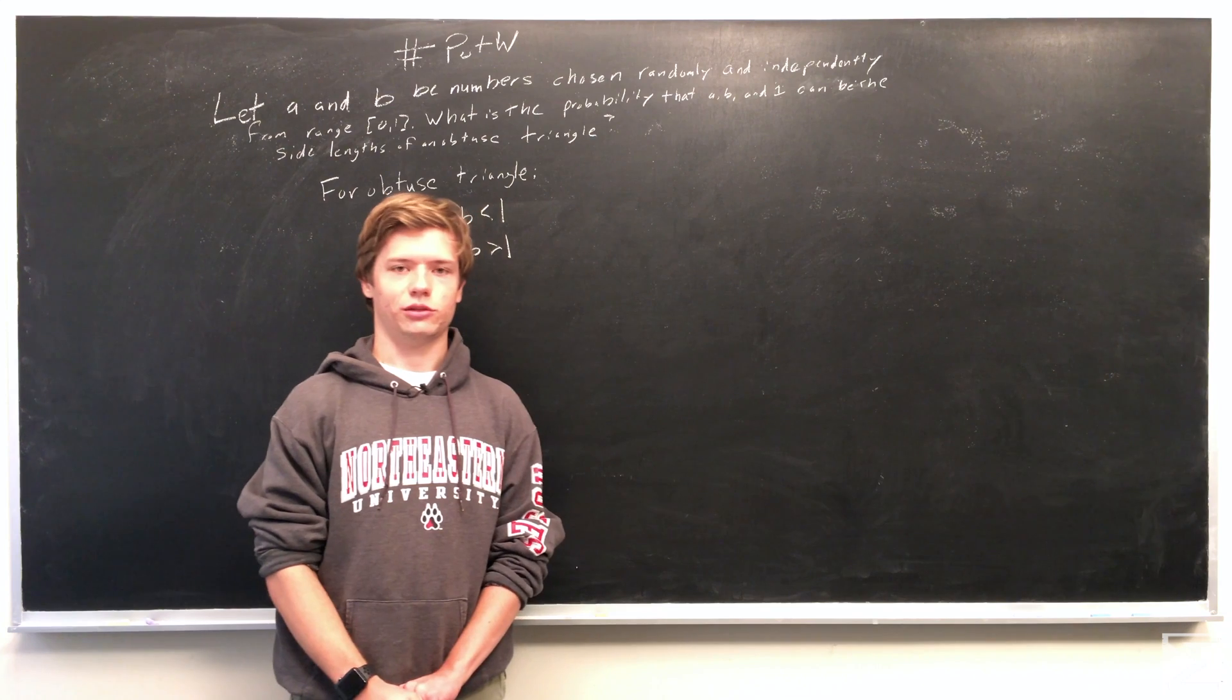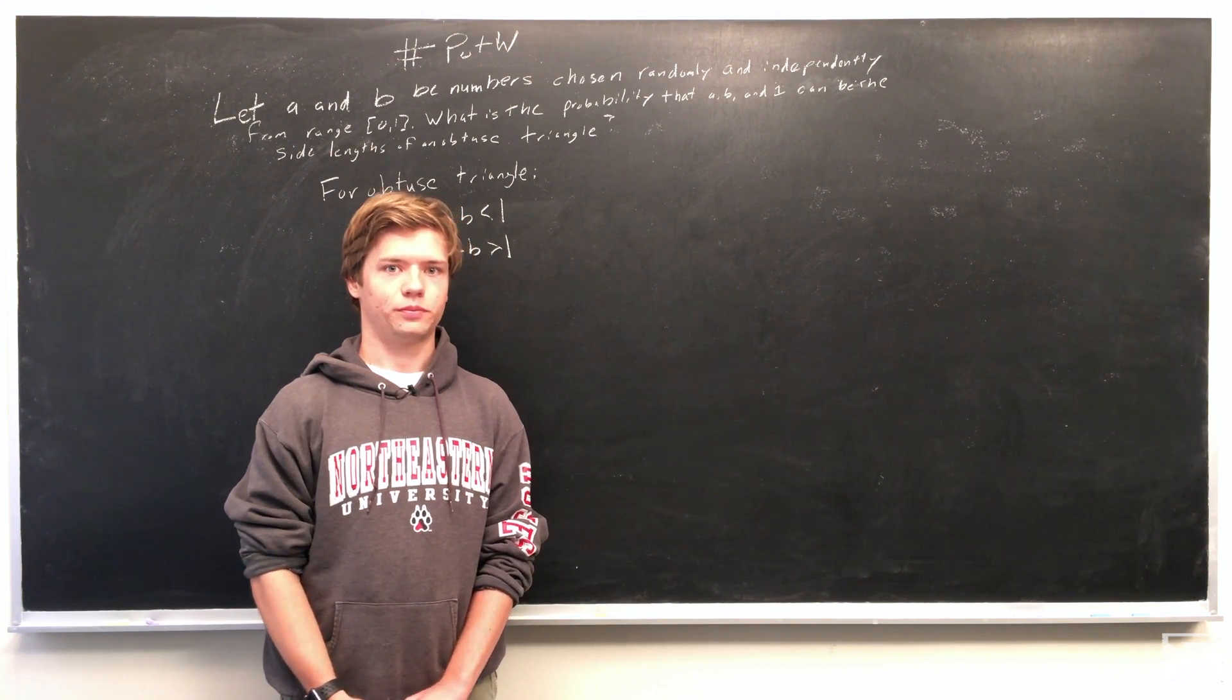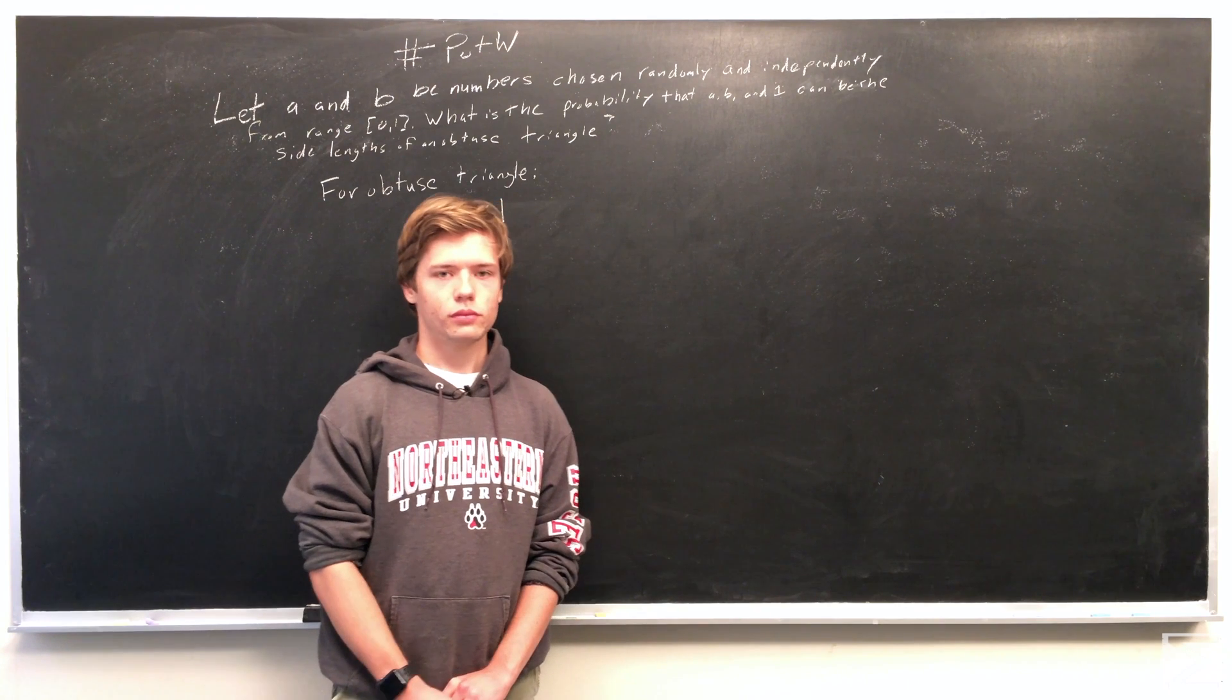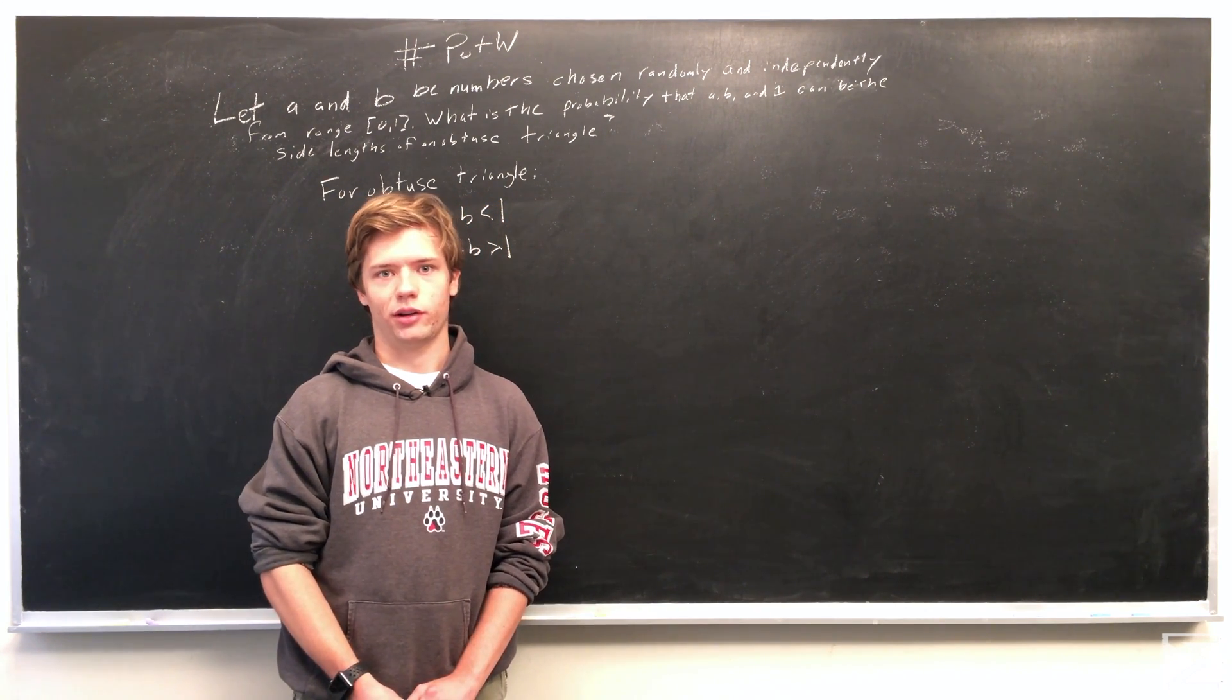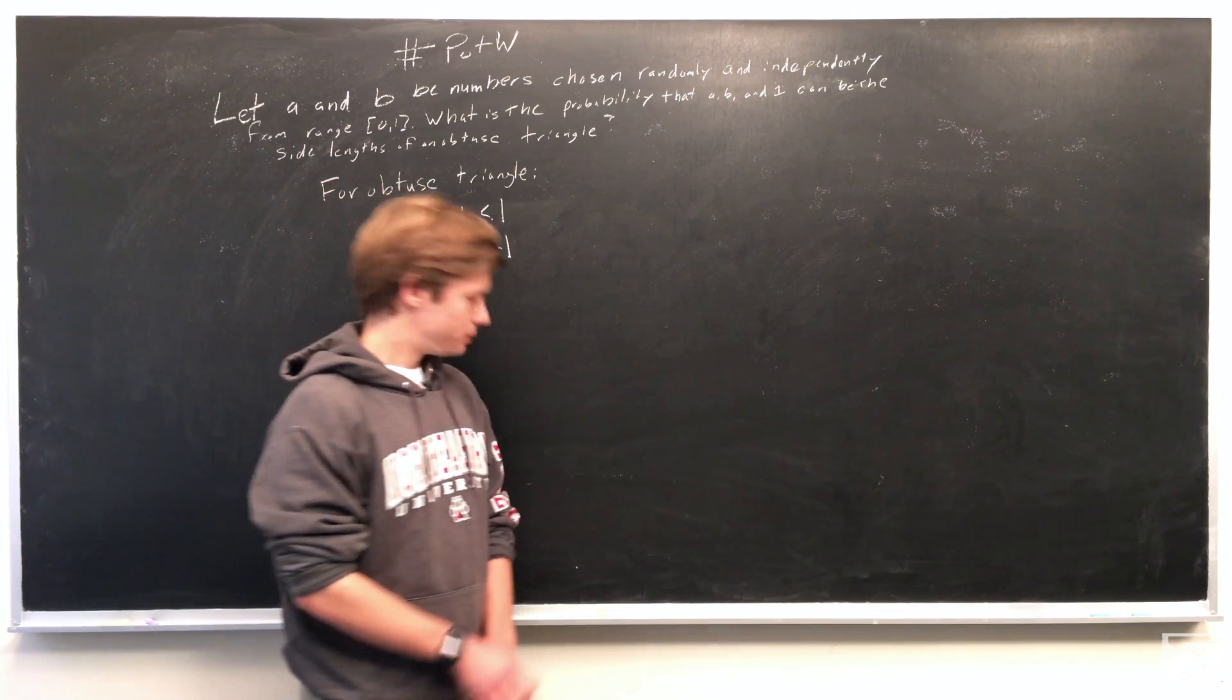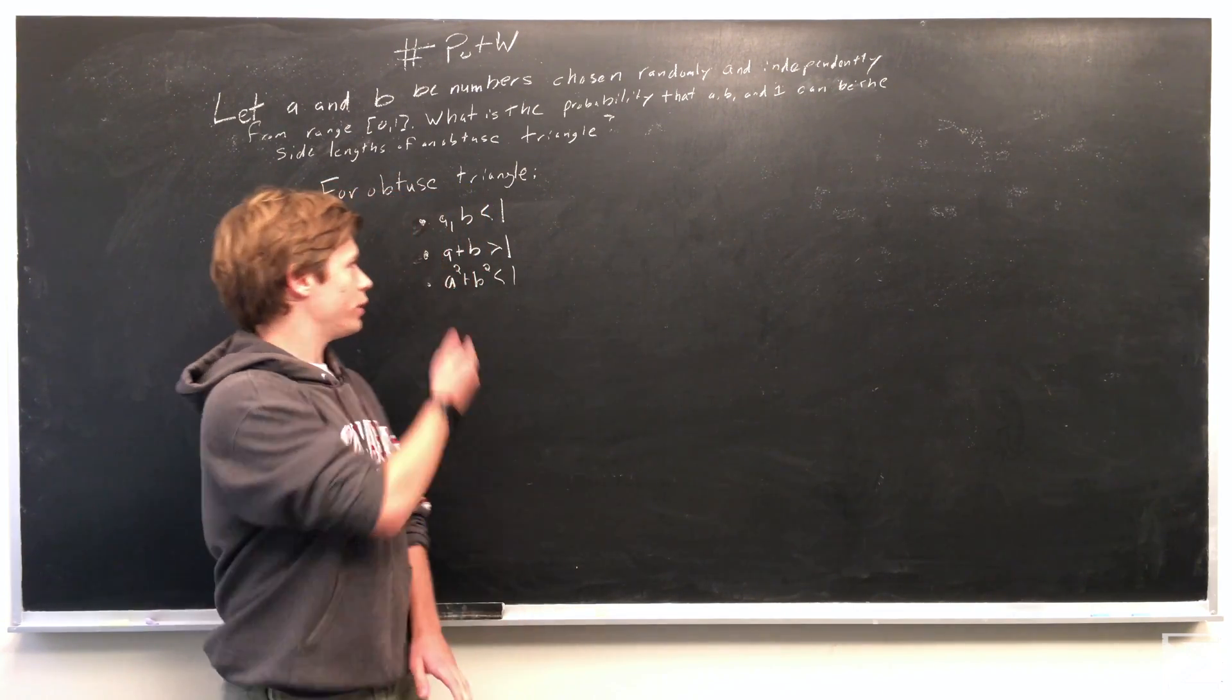In this case, C squared is equal to 1, which is the hypotenuse. And so in order for the triangle to have an angle greater than 90 degrees, the two legs of the triangle A and B, the sum of their squares needs to be less than the square of the hypotenuse, which is C. So that's how we figure out that A squared plus B squared is less than 1. We have these three conditions now.